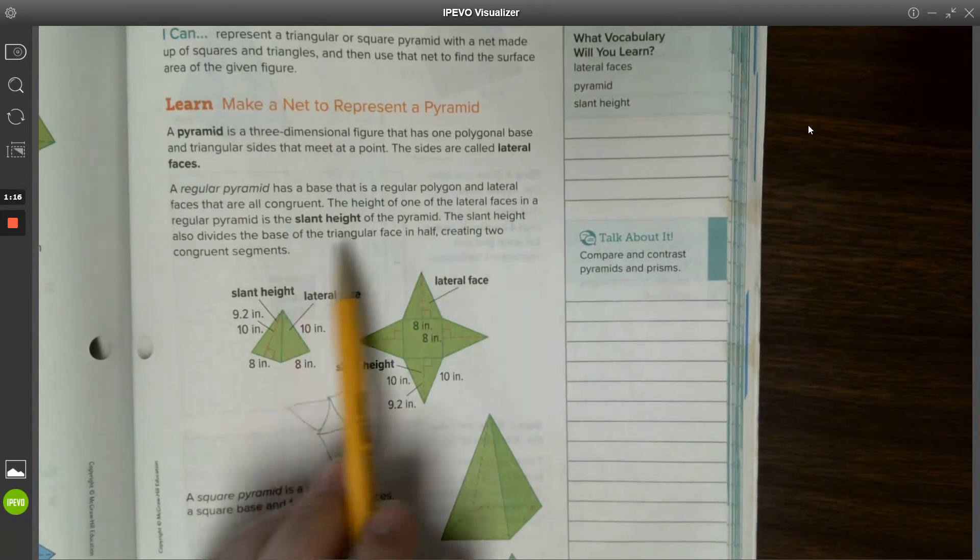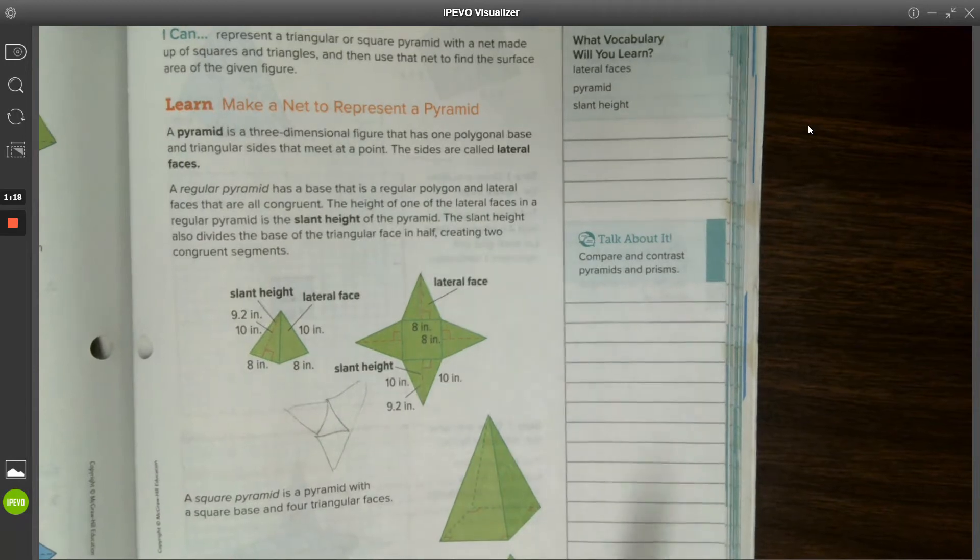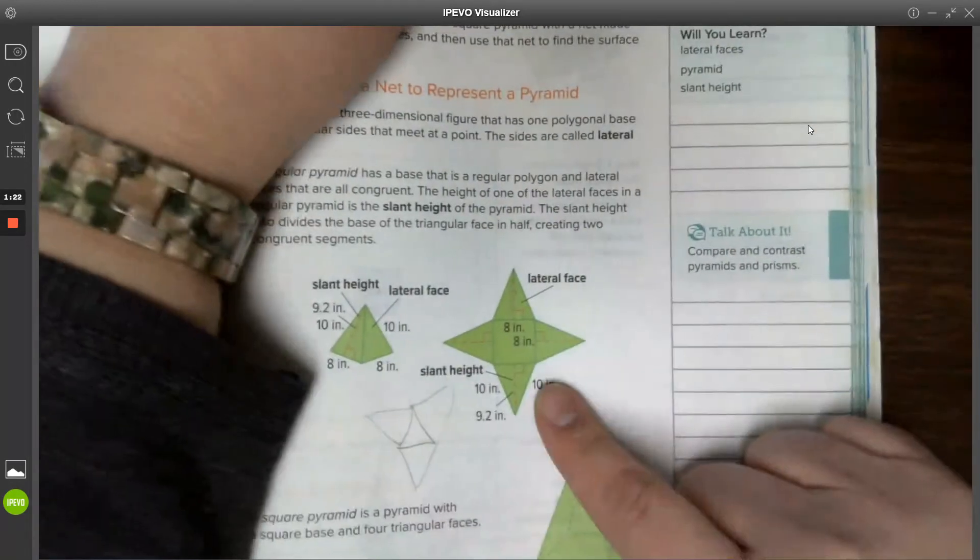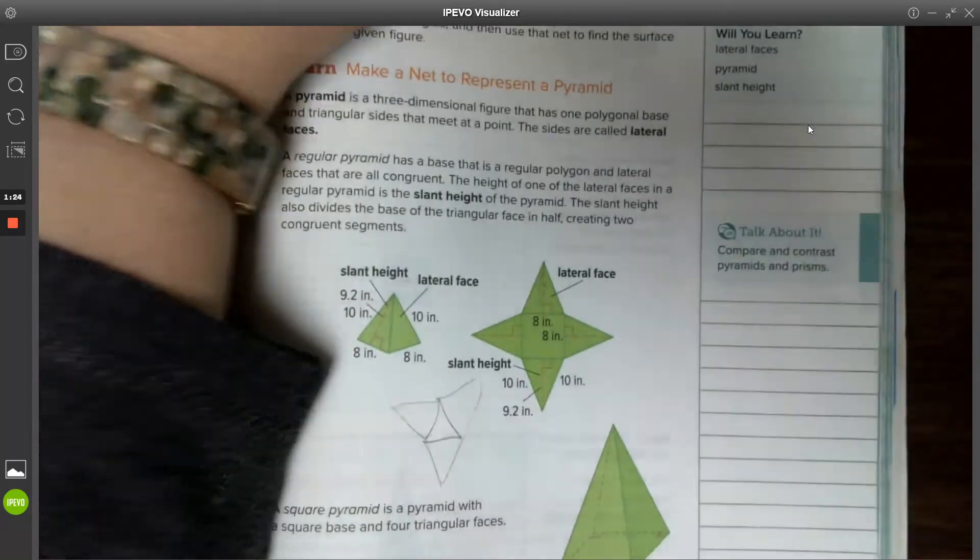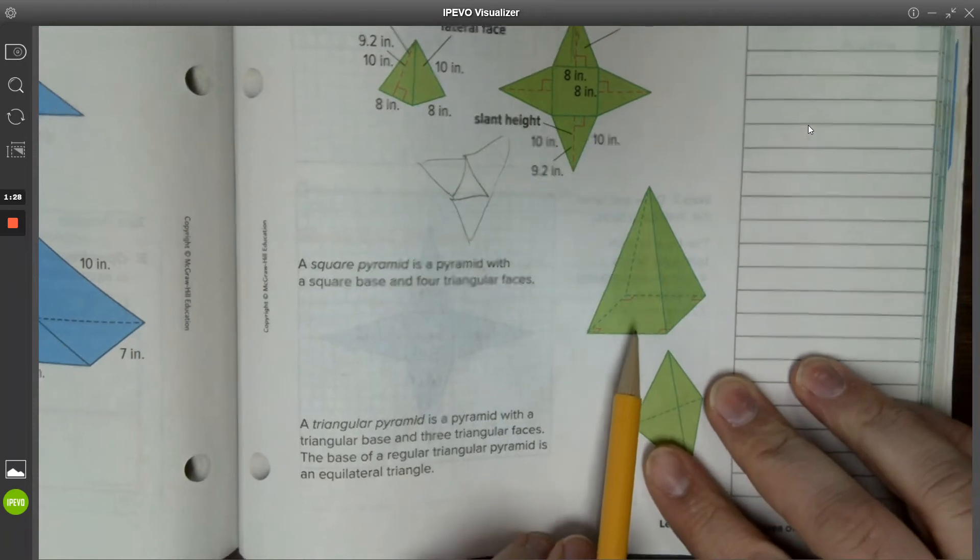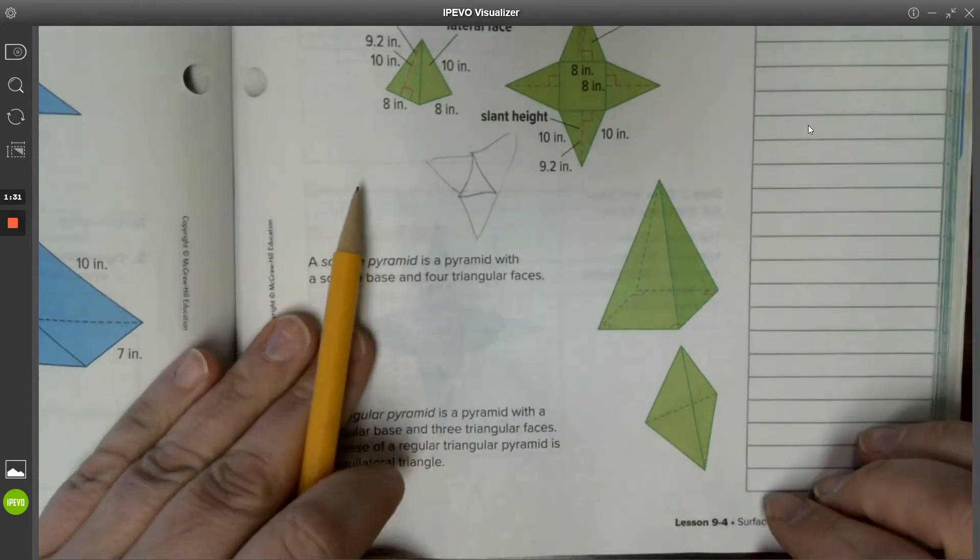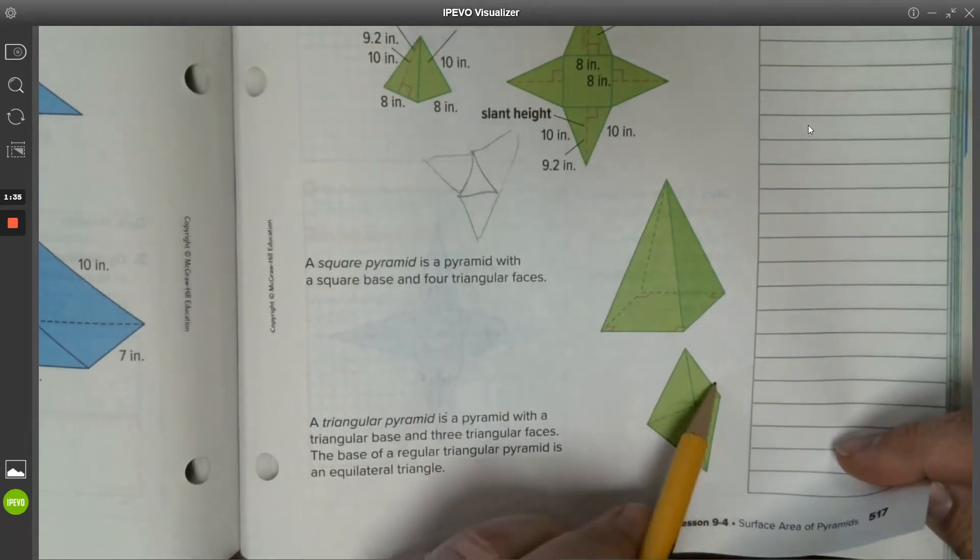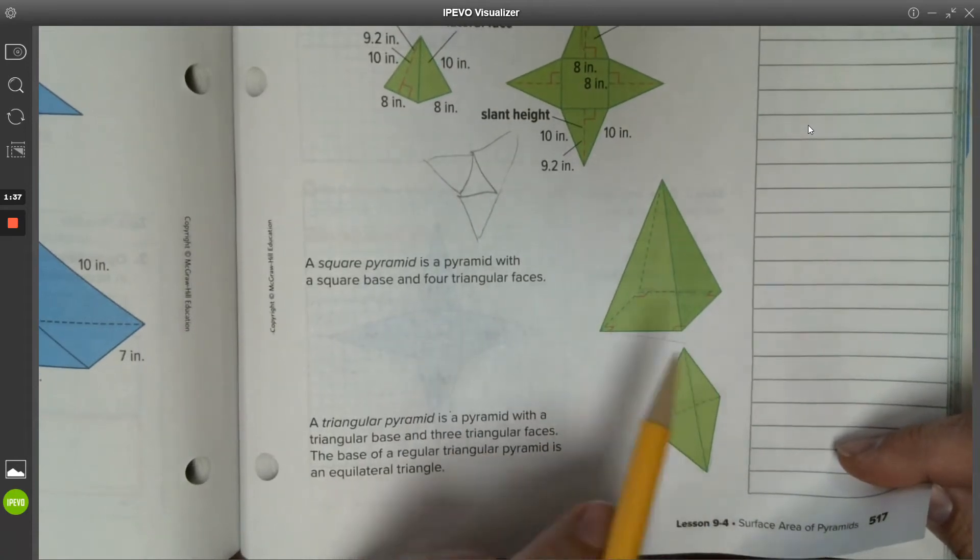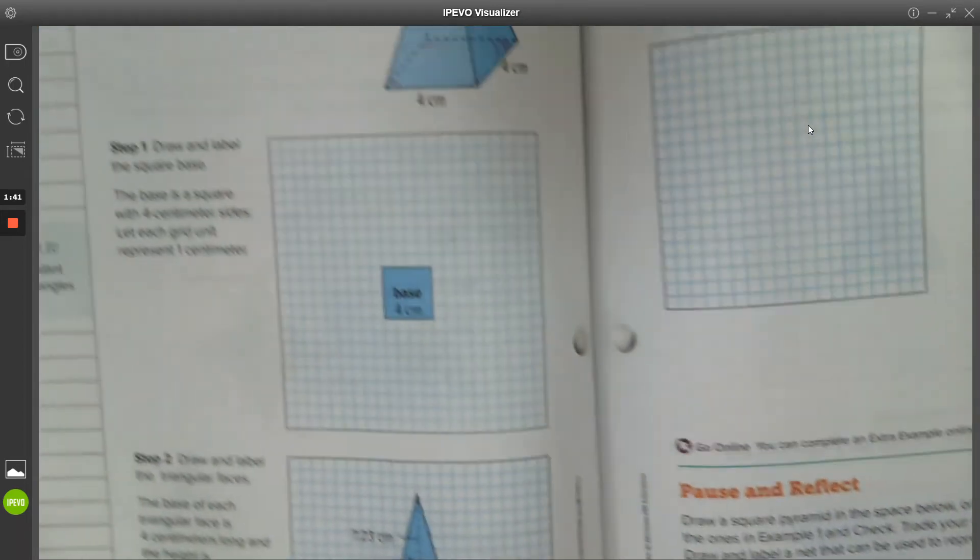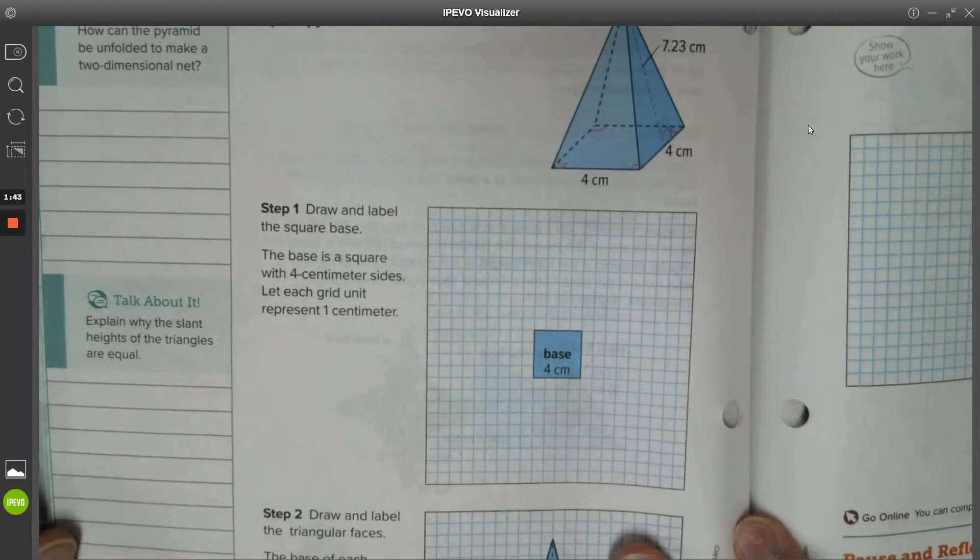Here we have the net of a regular pyramid. So this is a square base pyramid when it's fully assembled, and this is a triangular pyramid that's fully assembled. Notice that their bases are triangles or squares, and that classifies them as what type of pyramid.